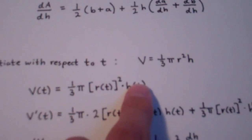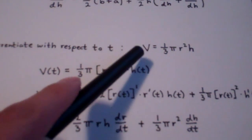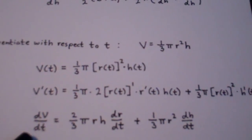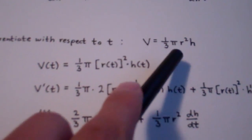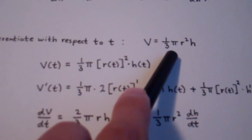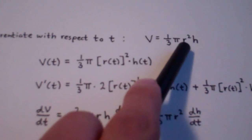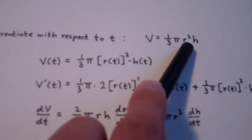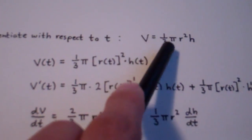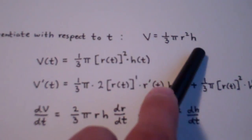So if we apply the shortcut, the derivative of v would be 1 times dV/dt. And over here, using the product rule, the derivative of 1/3 π r² would be 2/3 π r · dR/dt, plus 1/3 π r² times dH/dt.